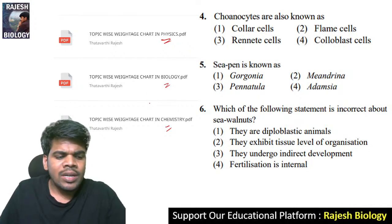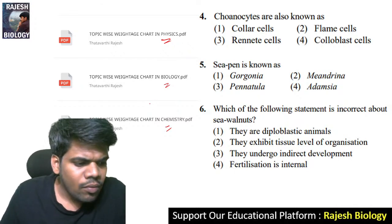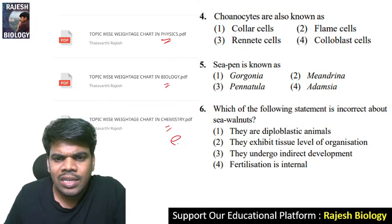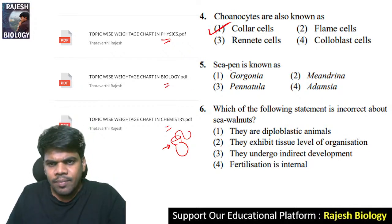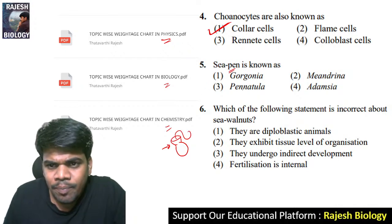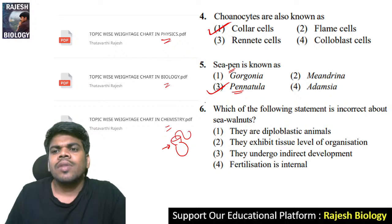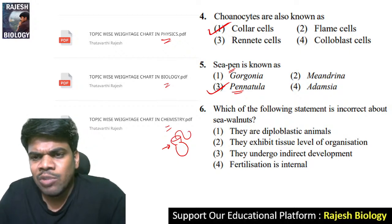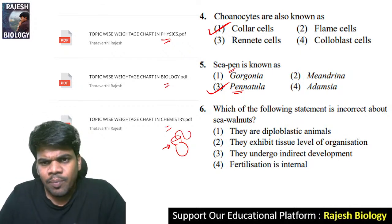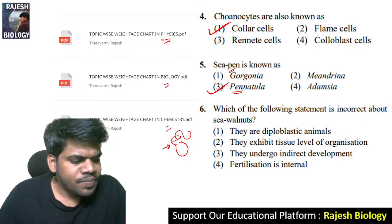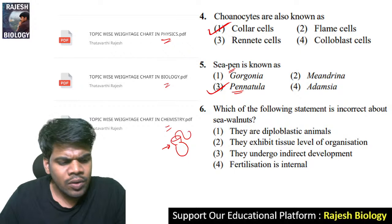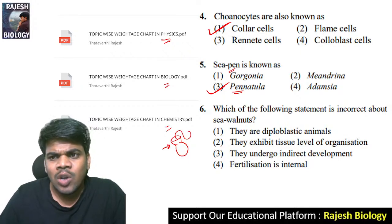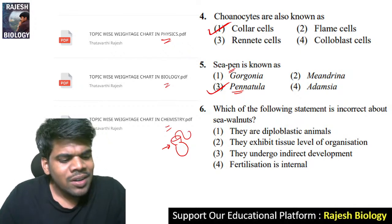Choanocytes — where did you hear the word choanocyte? Choanocytes are also known as collar cells. Their structure is like a collar, just like our shirt collar. C-pen is known as Pennatula. Mandarin means brain coral, Gorgonia, Veretillum, Sea anemone — different common names are there, but Sea pen is the common name of Pennatula. The answer is collar cells, not cnidoblast cells.